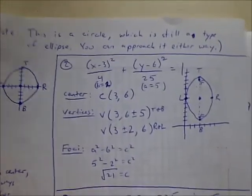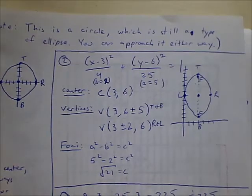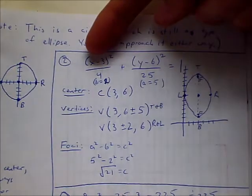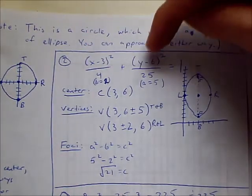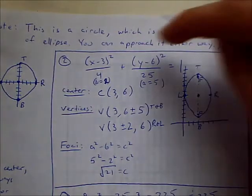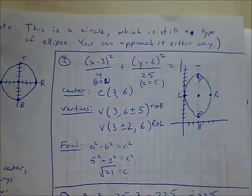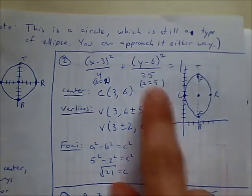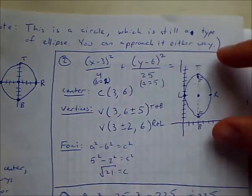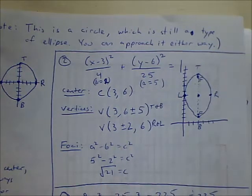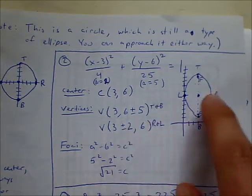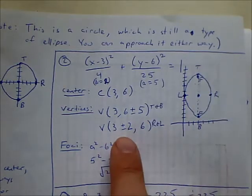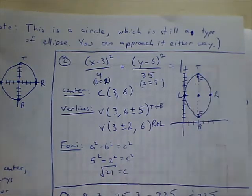Let's look at number 2. On number 2, we have a right shift of 3 and an up shift of 6, so the center is at (3, 6). A is 5 and B is 2. Since the bigger number is under the Y value, it's a tall ellipse. That means we're going to count up and down 5, and right and left 2, to get our vertices.